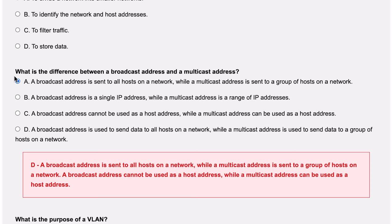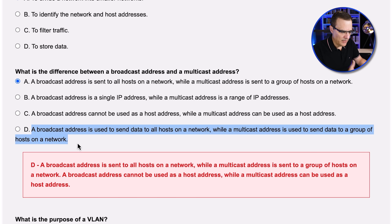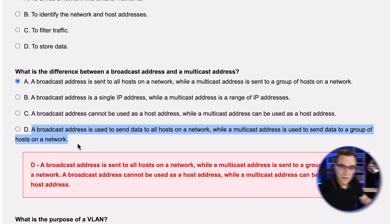Here's one: what's the difference between a broadcast and a multicast address? A broadcast address is used to send data to all hosts on a network, while a multicast address is used to send data to a group of hosts on a network. That's kind of correct — broadcast means everyone receives the frame on the local subnet or local VLAN; multicast means everyone who's subscribed to that multicast will receive the traffic.